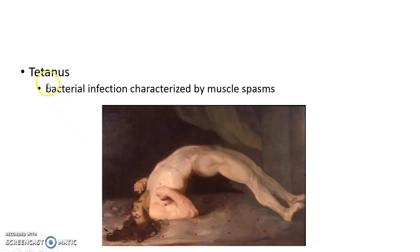Coming to tetanus, tetanus is a bacterial infection characterized by muscle spasms. It is caused by the bacterium Clostridium tetani.